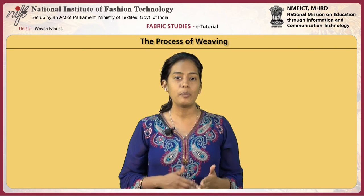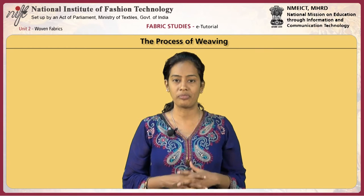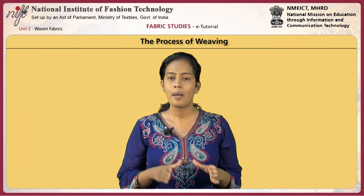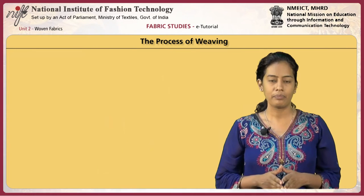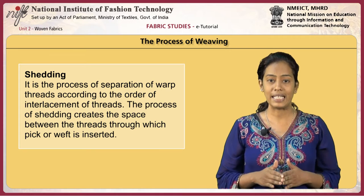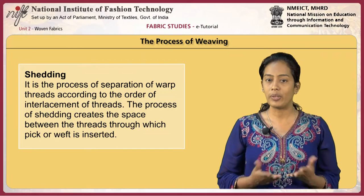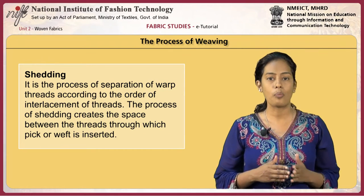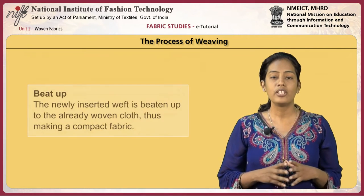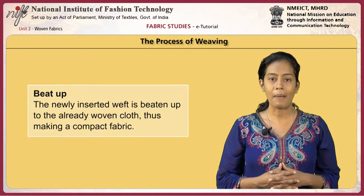Woven fabrics can be made with a variety of textures through various combinations of interlacement of threads. They are formed by the process of weaving involving three basic steps: shedding, picking and beat up. Shedding is the process of separation of warp threads according to the order of interlacement. The process of shedding creates the space between the threads through which the pick or weft is inserted. The process of insertion of weft is known as picking. The newly inserted weft is beaten up to the already woven cloth, thus making a compact fabric.